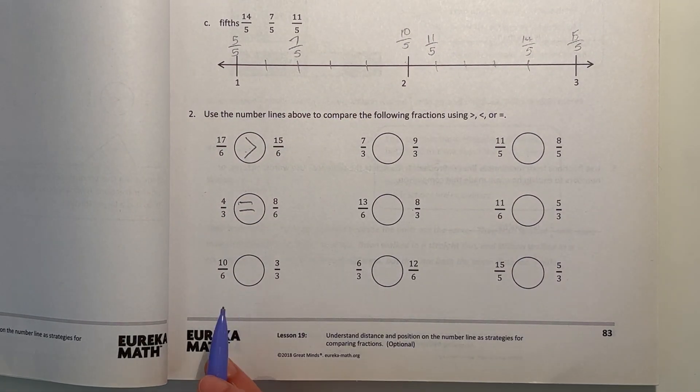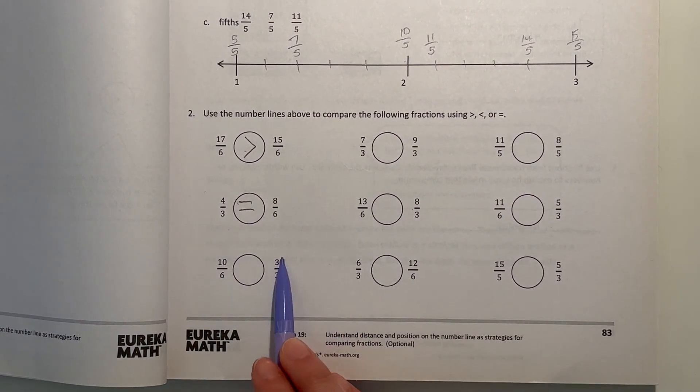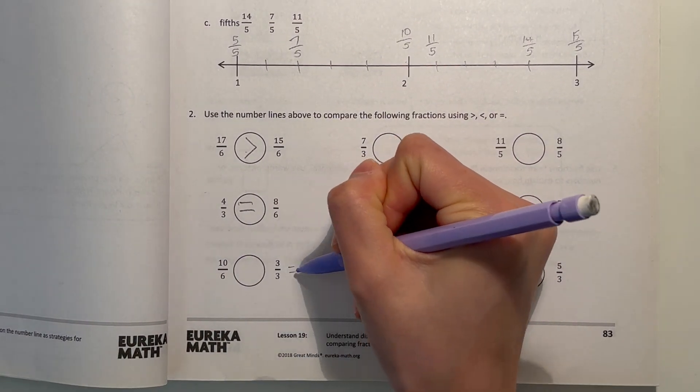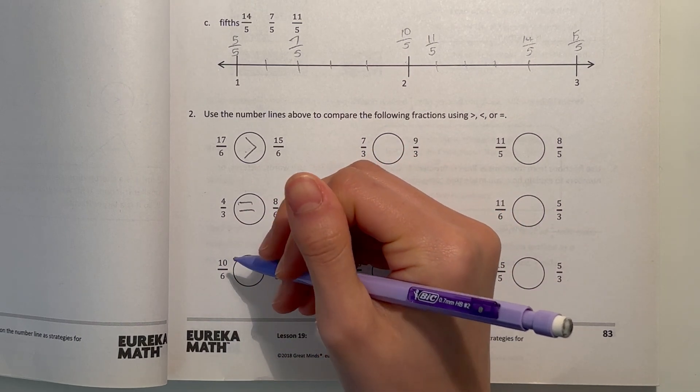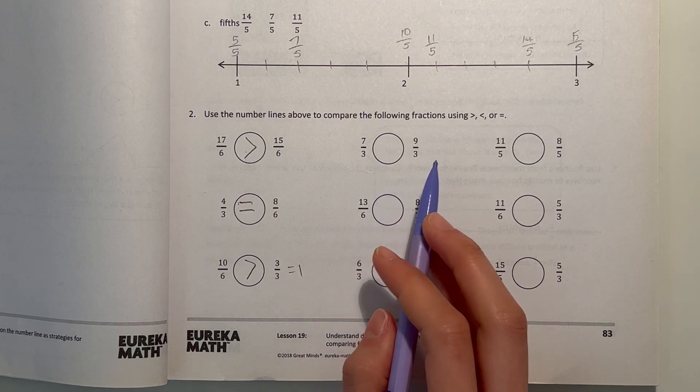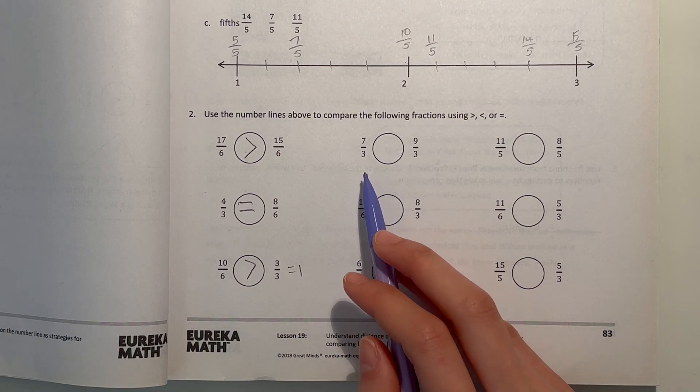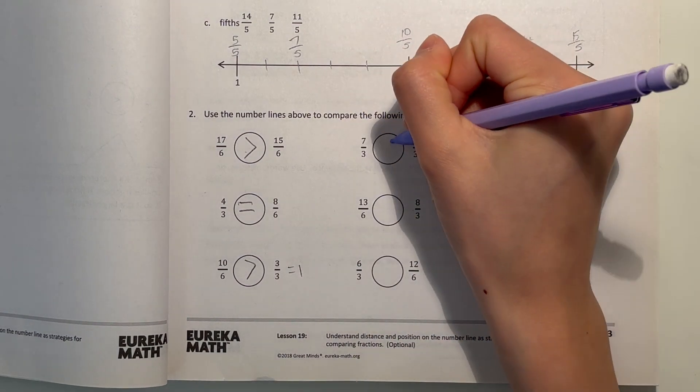Now 10 sixths and 3 thirds. Well, we don't really even need to compare the number line. 3 thirds is equal to 1. And 10 sixths is greater than 1. So that would be greater than 3 thirds. Now we have 7 thirds and 9 thirds. The denominator is the same. So we look at the numerator. 9 thirds is greater because 9 is greater than 7.